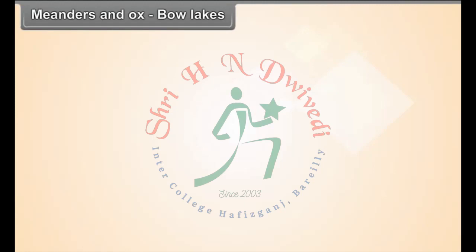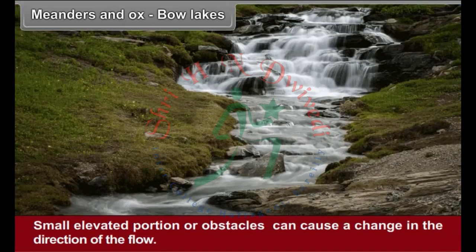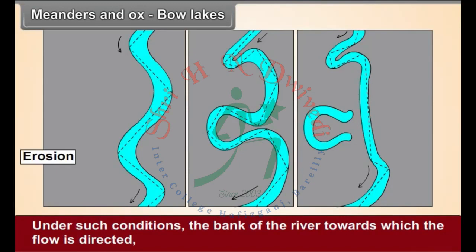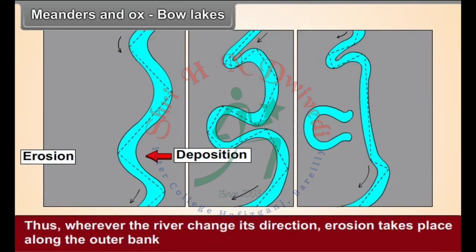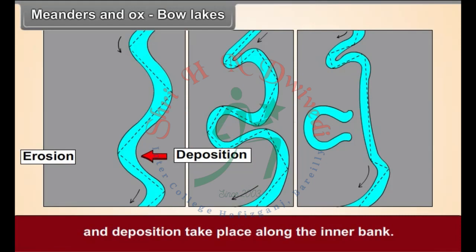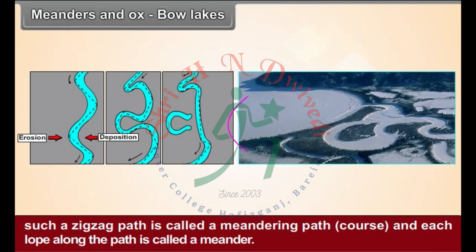Meanders and Oxbow Lakes: When the amount of load in the flow increases considerably, the river fails to transport all the material. Small elevated portions or obstacles can cause a change in the direction of flow. The bank of the river towards which the flow is directed (outer bank) gets eroded, and the opposite bank (inner bank) experiences deposition. Thus, wherever the river changes its direction, erosion takes place along the outer bank and deposition along the inner bank. If these conditions occur again and again, the river develops a zigzag path called a meandering course, and each loop along the path is called a meander.